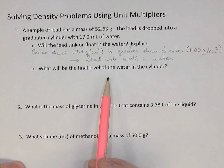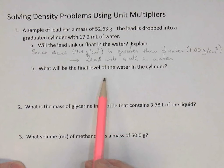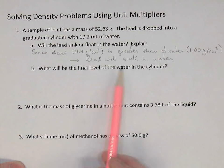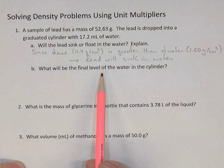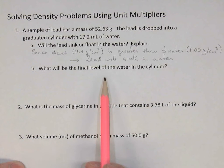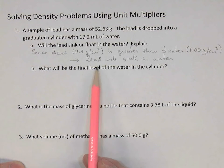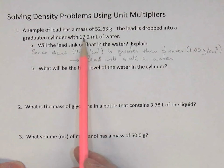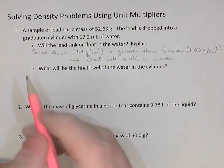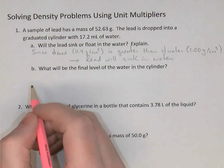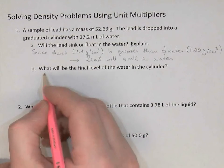So what will be the final level of water in the cylinder? Well, we know that if it sinks it's going to displace its own volume — water displacement. So what we need to know is the volume of the lead. If we know the volume, we can simply add that to 17.2 to get the final level of the water. Here's the density calculation using a unit multiplier.